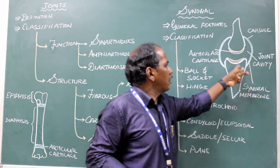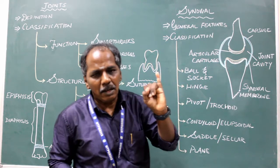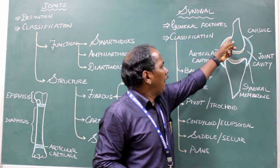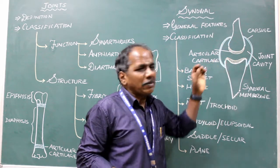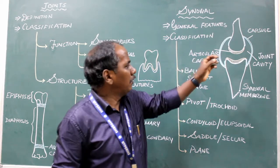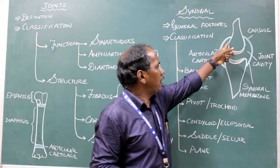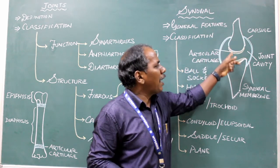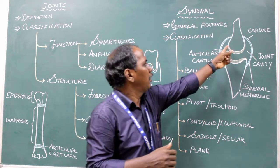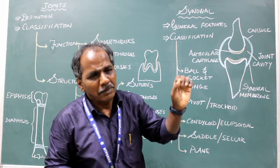First point: it has an outer covering known as a capsule. Second point: the inner surface of the capsule is lined by synovial membrane. The synovial membrane not only lines the inner surface of the capsule but also lines the non-articular part of the bone present in the joint — that is, the area which is not articulating when the two bones are articulating.